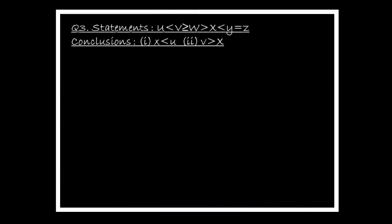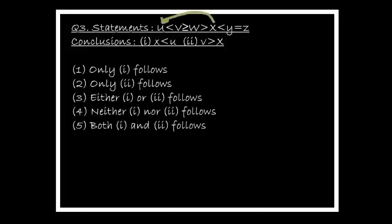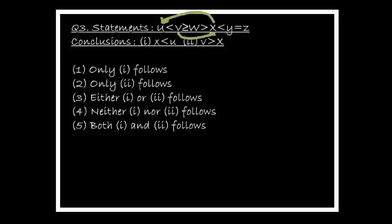Another question: a statement is given with conclusions one and two. Conclusion one: x less than v — symbols between x and v include less than and greater than — equal priority conflict, so conclusion one is not possible. Conclusion two: v greater than x — draw a forward arrow from v to x; symbols are greater than, equal to, greater than — highest priority is greater than. Conclusion two is correct. Answer: only conclusion two follows.